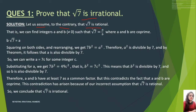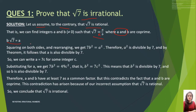Let us assume to the contrary that root 7 is rational — we start with a contradiction. If it is a rational number, it can be written in the form A upon B. So root 7 equals A upon B, where A and B are co-prime. Once you cross multiply, you get B times root 7 equals A. Now square both sides, giving 7B squared equals A squared.